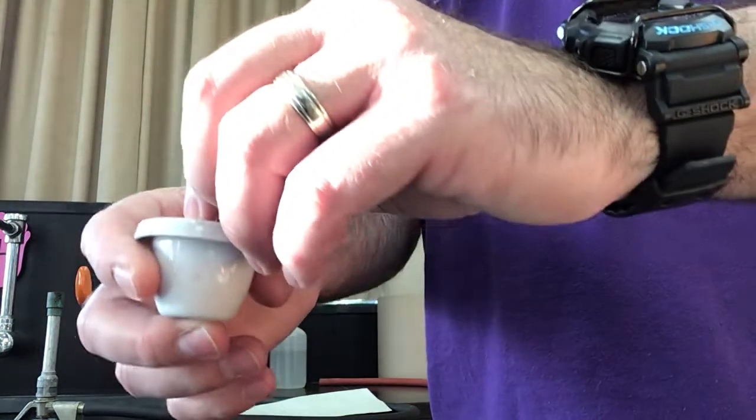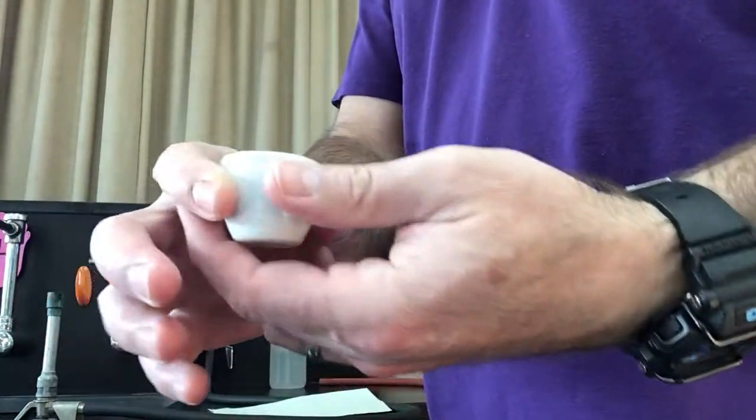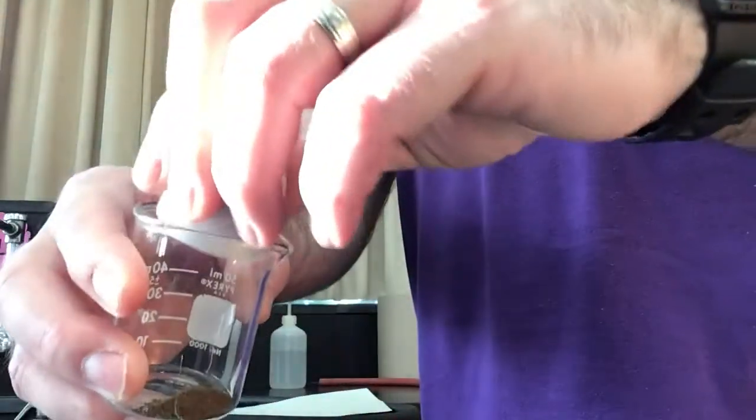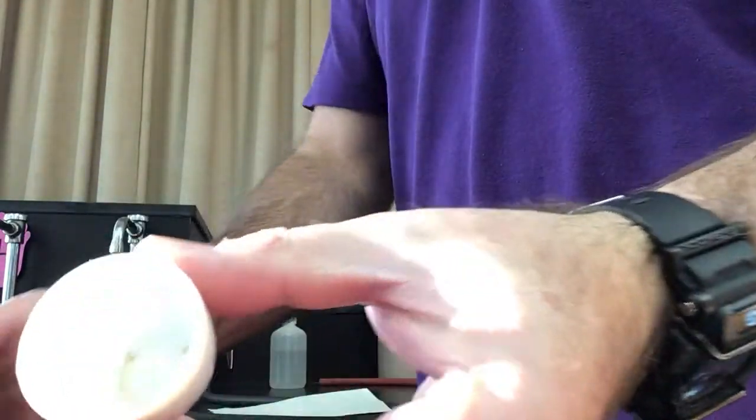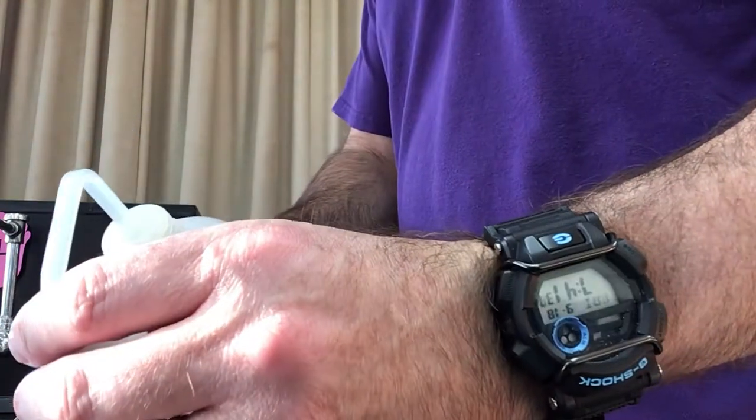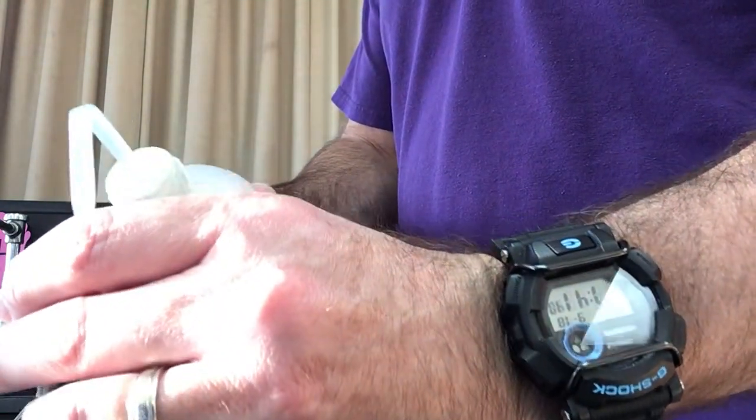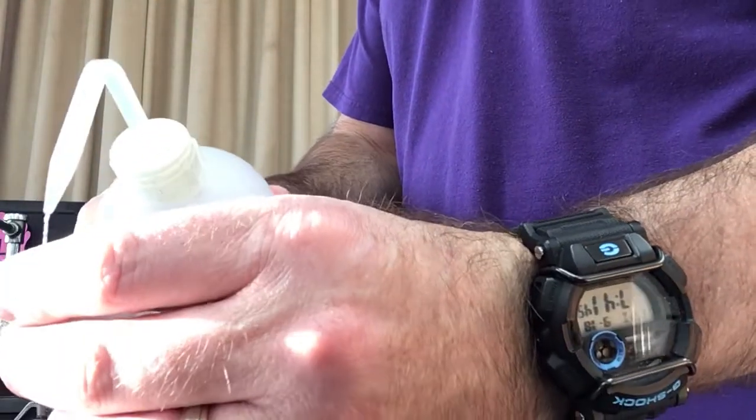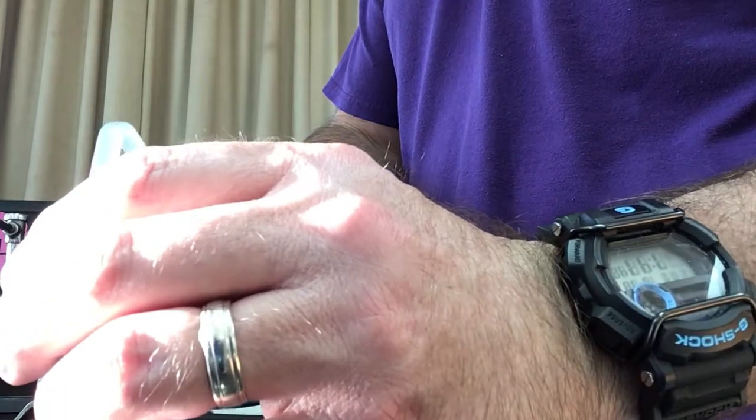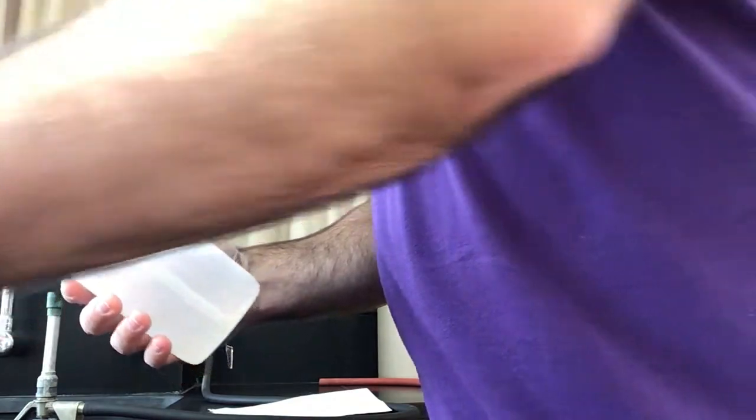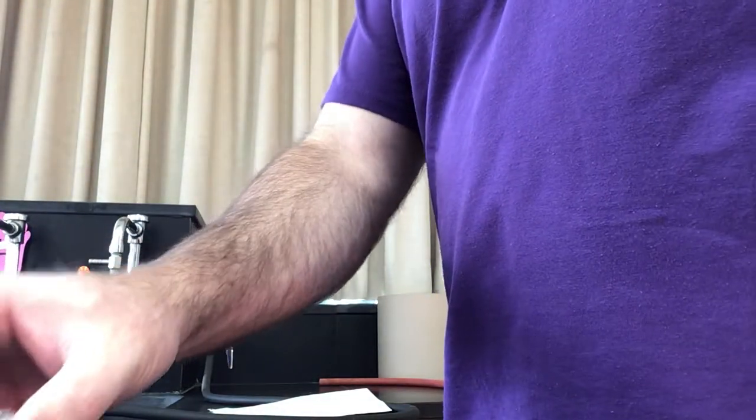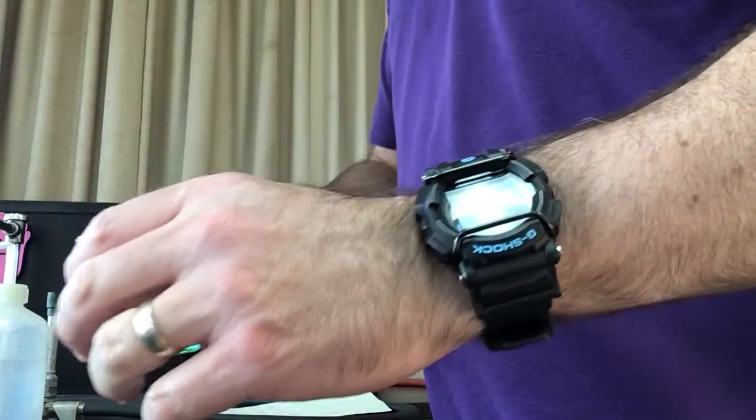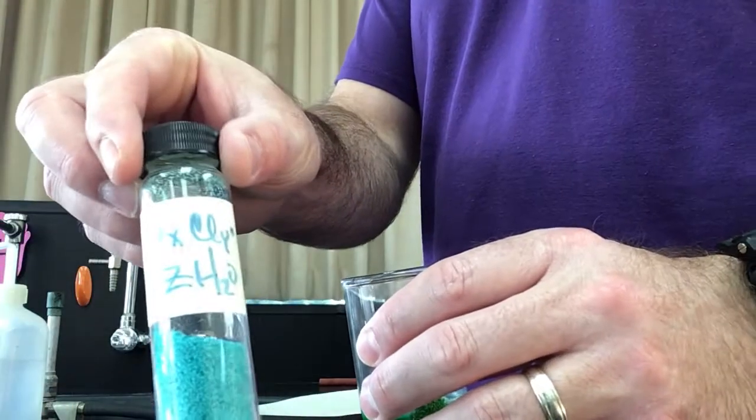Now we're going to dump this into a 50 milliliter beaker. There's still a little bit of stuff in there, so we're going to rinse this a couple times with some water and then dissolve our solid. It might seem kind of weird that we heated this up to get rid of all the water and then now we're going to dissolve it, but what we had to do is figure out how many moles of water were attached in our original sample.